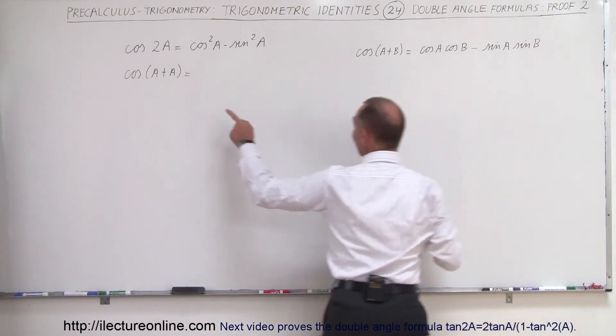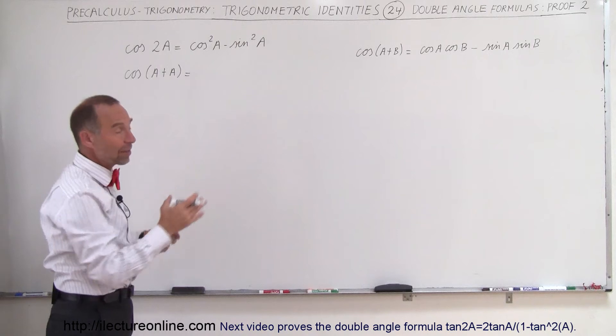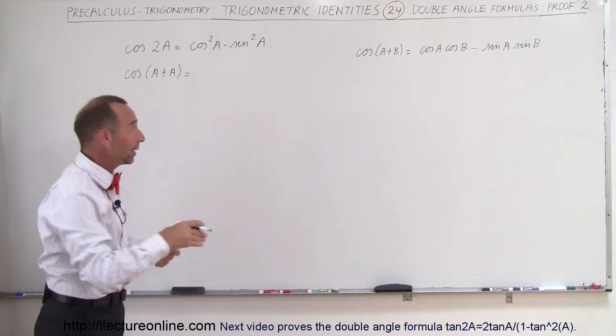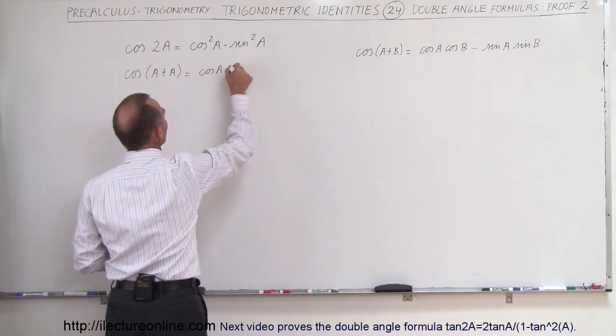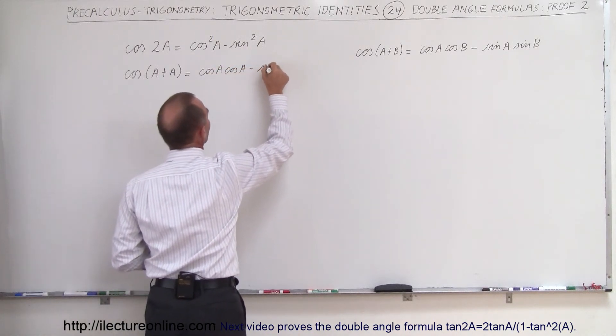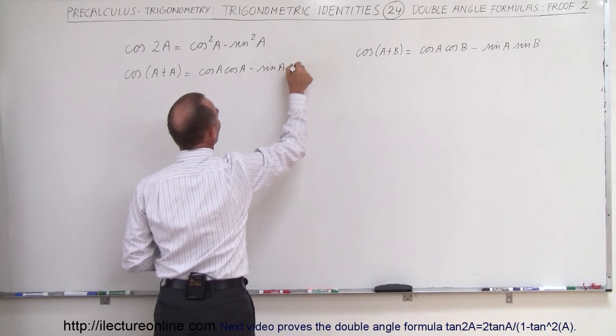All right, now in this case, since B is now A, we'll write the exact same thing, but wherever we see a B, we're simply going to write an A. So this becomes the cosine of A times the cosine of A minus the sine of A times the sine of A.